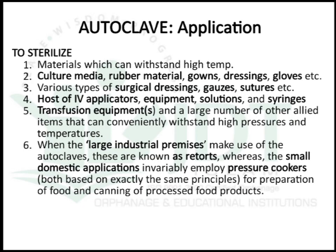The autoclave is mainly used for sterilization of materials that can withstand high temperature, including culture media, rubber materials, gowns, dressings, gloves, various surgical dressings, sutures, IV applicators, equipment, solutions, syringes, transfusion equipment, and many other items that can withstand high pressure and temperature. In large industrial settings, autoclaves are known as retorts. For domestic applications, a simple pressure cooker can be used for steam sterilization.